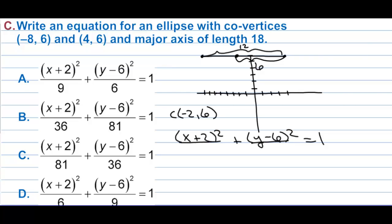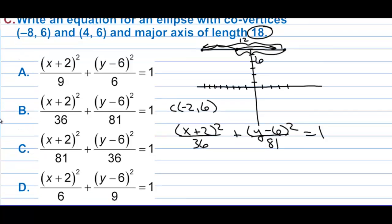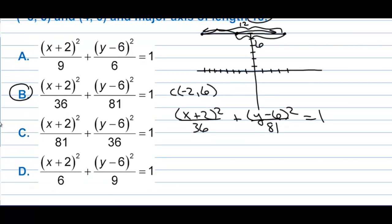Going 6 each way along x gives us b, so b squared is 36 under x. The major axis has total length 18, so half of that is 9, and 9 squared is 81. The equation is (x plus 2) squared over 36 plus (y minus 6) squared over 81 equals 1.